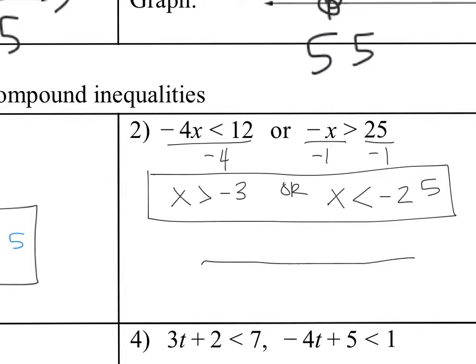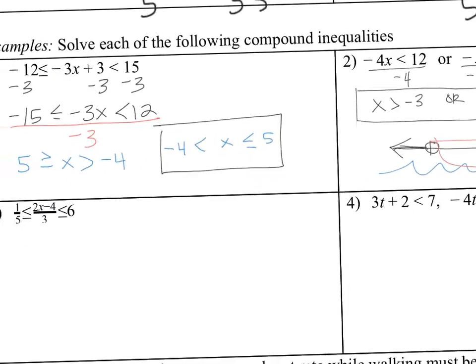I try to think of it as it kind of looks like an or, an O-A-R on a rowboat. So if you graphed x as greater than negative 3, it goes this way, an open dot, or x is less than negative 25. To me, it looks like an or, like a rowboat here.